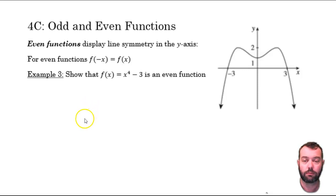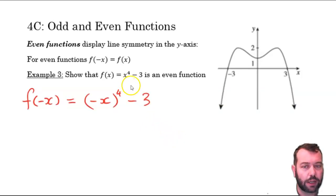Here is an example to demonstrate this. We're asked to show that this function, x to the power of 4 minus 3, is an even function. So what I do is I substitute negative x wherever I see x. So the function of negative x is negative x to the power of 4 minus 3.